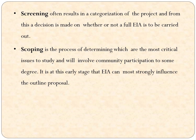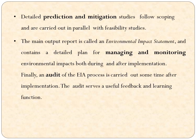It is at this early stage that EIA can most strongly influence the outline proposal. Detailed prediction and mitigation studies follow scoping and are carried out in parallel with feasibility studies. The main output report — called the Environmental Impact Statement — contains a detailed plan for managing and monitoring environmental impacts both during and after implementing the developmental project. Finally, an audit of the EIA process will be carried out after some time, giving useful feedback and a learning function.